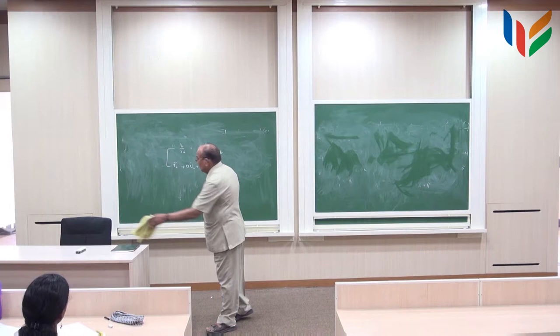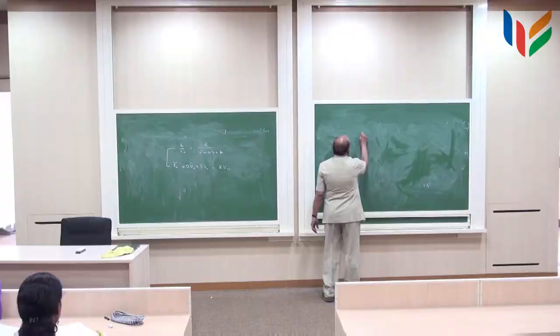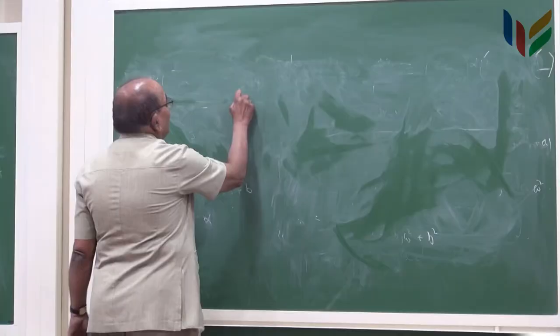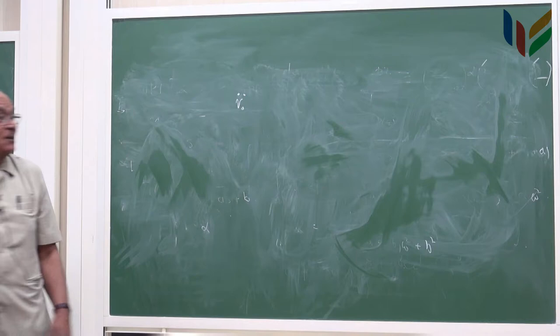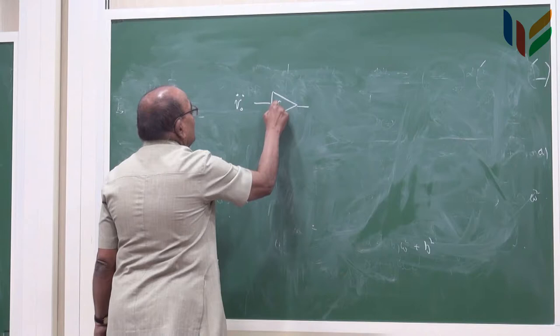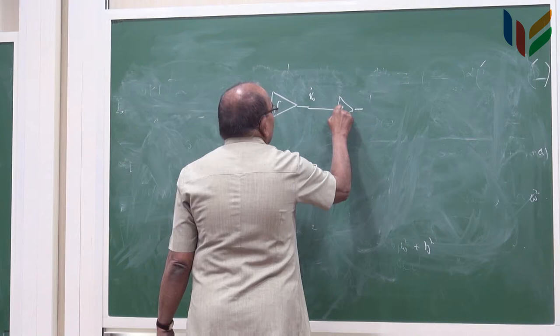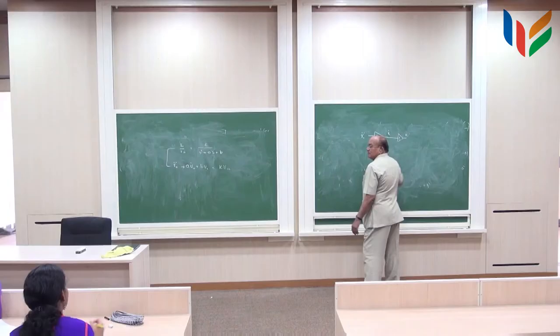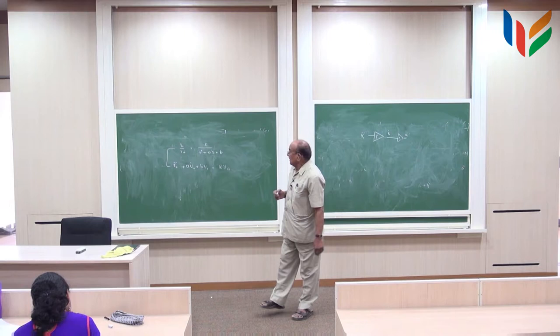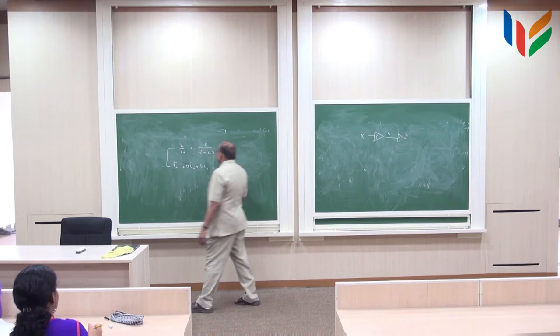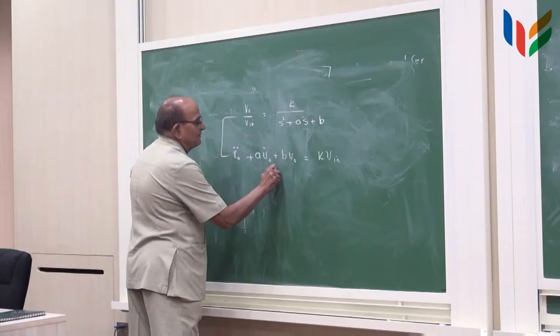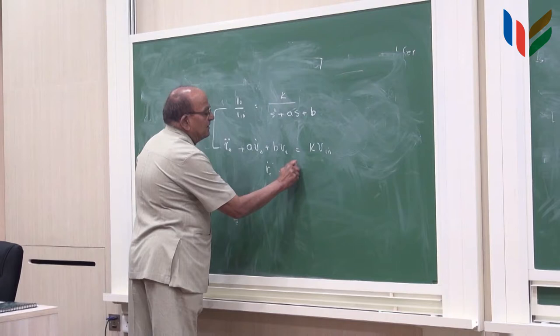What we did in analog computers in good old days. How do I do that? Let me, somebody has given you V0 double dot. Let us start with V0 double dot. If I put one integrator, I get V0 dot. If I put one more integrator, I get V0. Now this V0 double dot fellow must be equal to according to this expression, KVin minus A V0 dot minus V V0.